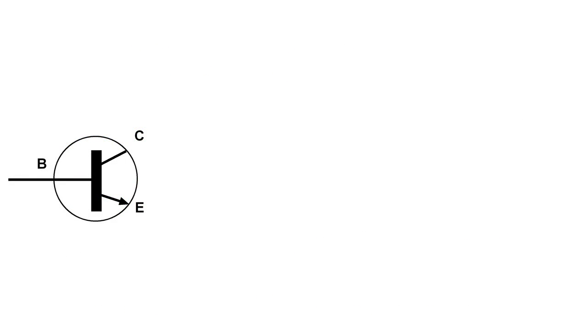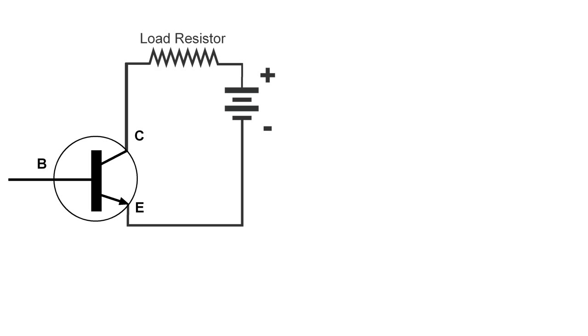Here is a symbol for an NPN transistor. The base is B, the collector is C, and the emitter is E.